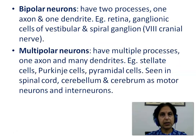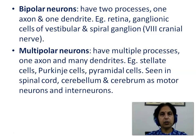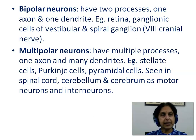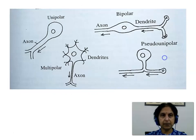Bipolar neurons have two processes: one axon and one dendrite. Examples are seen in the retina and ganglionic cells of vestibular and spiral ganglia of the eighth cranial nerve. Multipolar neurons have multiple processes, of which one is an axon and the others are numerous dendrites. Examples include stellate cells, Purkinje cells, and pyramidal cells seen in the spinal cord, cerebellum, and cerebrum as motor neurons and interneurons.